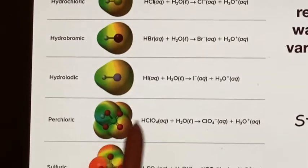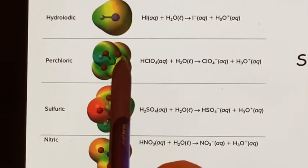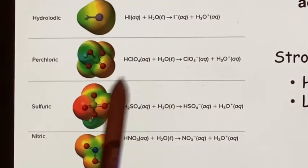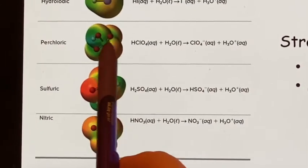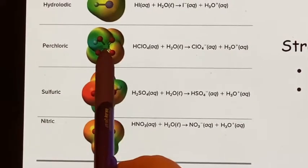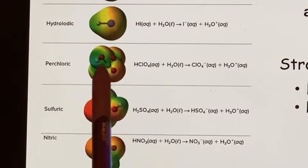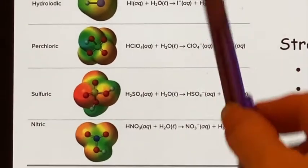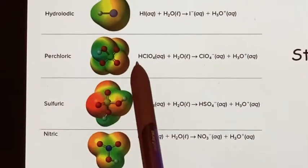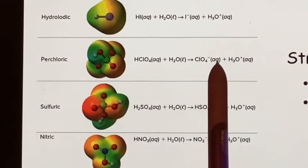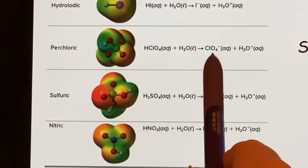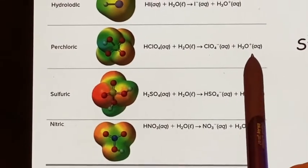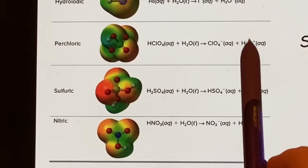Now perchloric, they're starting to try to show you what it looks like. It's kind of difficult in three dimensions on a flat surface, but you can see the chlorine's in the center, and there's oxygens attached to it, and then the hydrogen is attached to one of the oxygens. At any rate, what happens is it's going to lose that hydrogen, forming your perchlorate ion. But again, we find that we have developed hydronium ions as the conjugate acid.